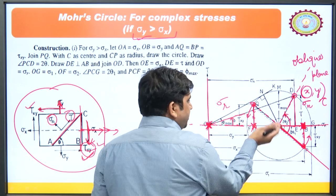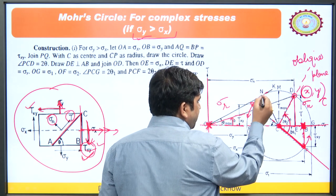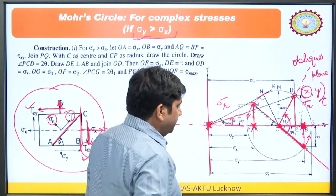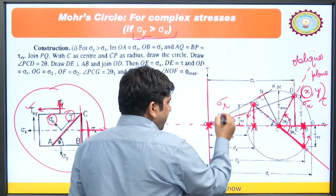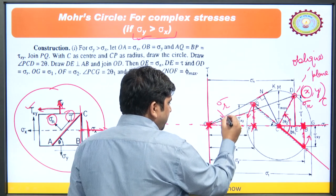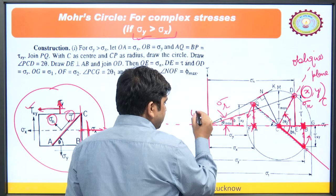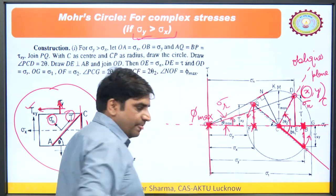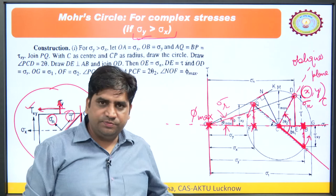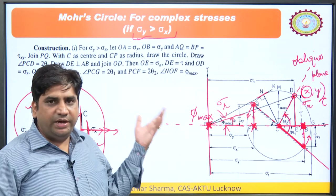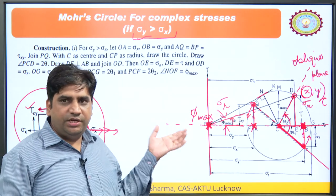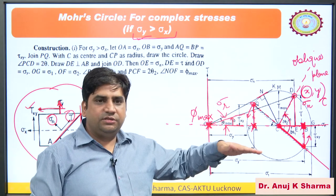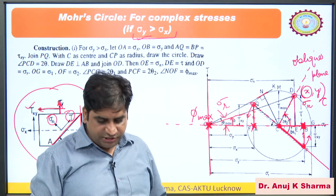The point of maximum obliquity gives phi max. The difference between this complex stress Mohr circle and the biaxial one is that adding the shear plane introduces an inclination to the reference line. For the second case where sigma x is greater than sigma y, it is just the reverse situation — sigma x point moves further along the axis and sigma y point is closer. Otherwise the construction method remains the same.